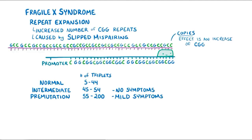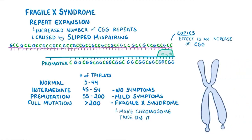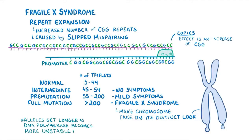If an allele has over 200 CGGs, then it's considered a full Fragile X syndrome mutation, and can make the chromosome take on its distinctive look. Alleles can tend to get longer and longer as DNA polymerase becomes more and more unstable copying the longer stretches of repeats. So an intermediate expansion allele can become a pre-mutation allele, and a pre-mutation allele can expand to become a full Fragile X syndrome mutation.